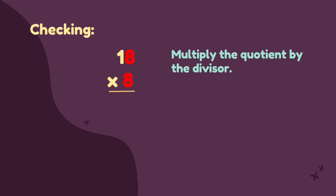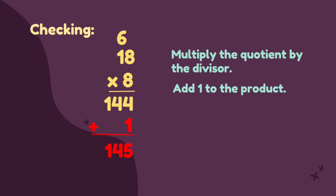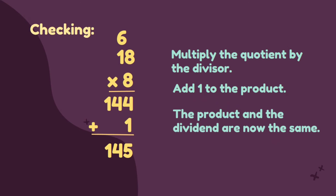8 times 8 is equal to 64. 8 times 1 is equal to 8, plus 6 is equal to 14. Our product is 144. Next, we need to add 1 to the product: 144 plus 1 is equal to 145. Therefore, our quotient is correct. The product and the dividend are now the same.